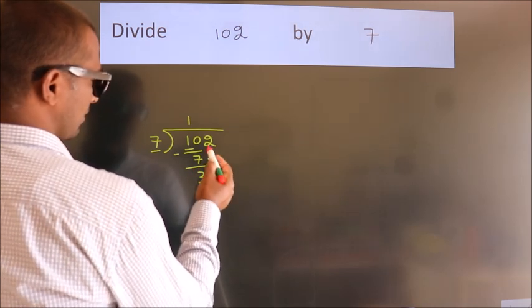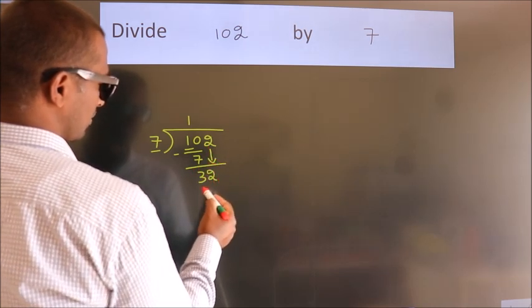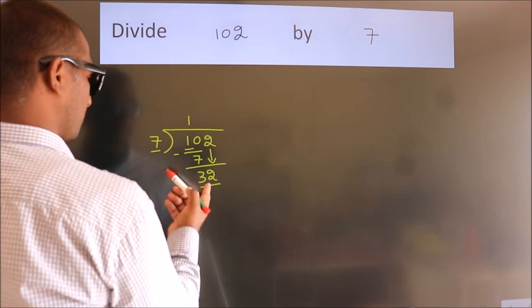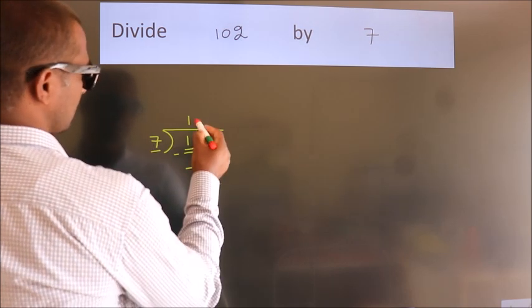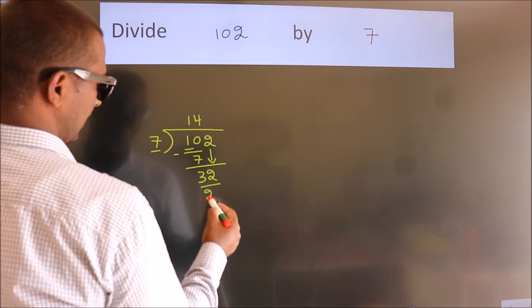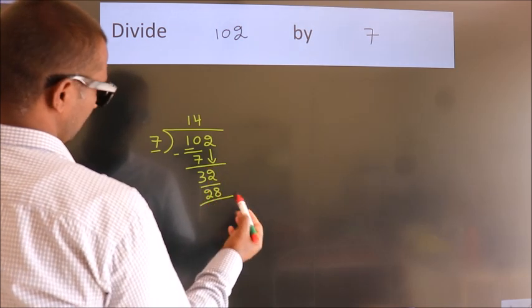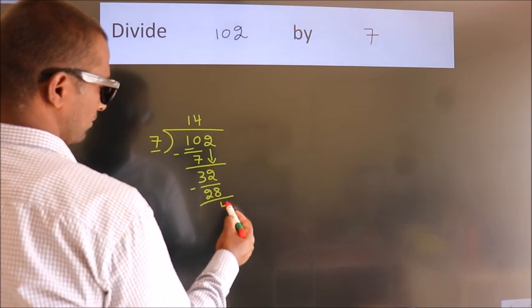After this, bring down the beside number, so 2 comes down, giving us 32. A number close to 32 in the 7 table is 7 fours 28. Now we subtract and get 4.